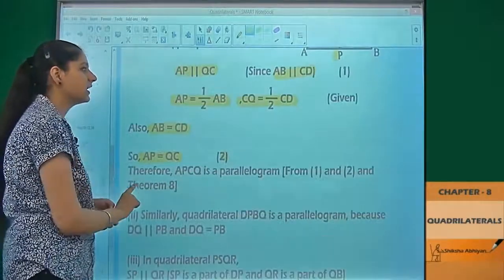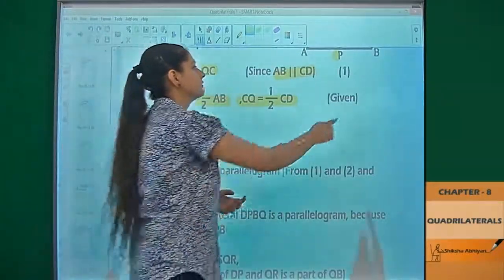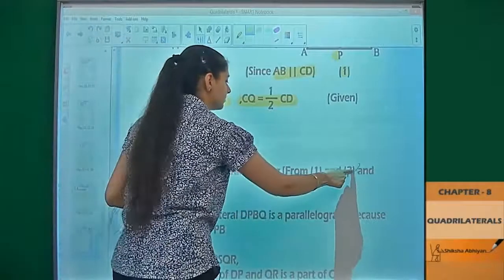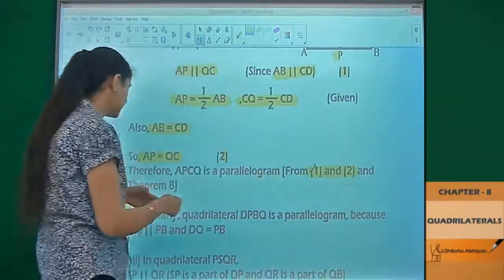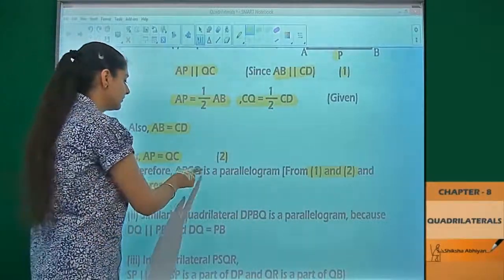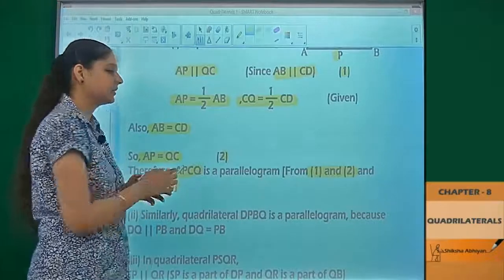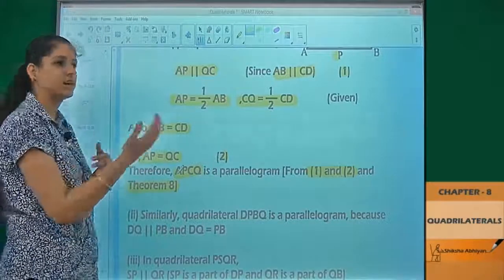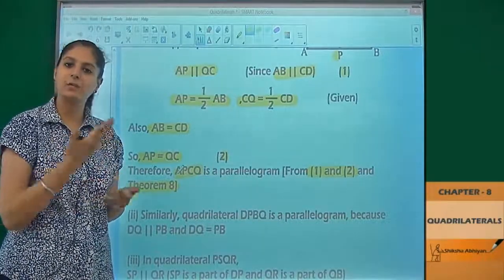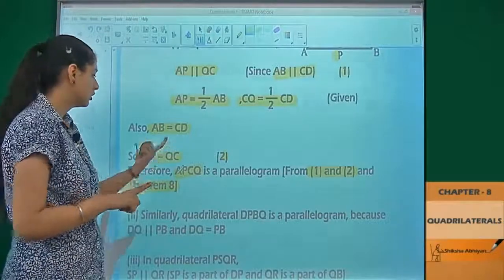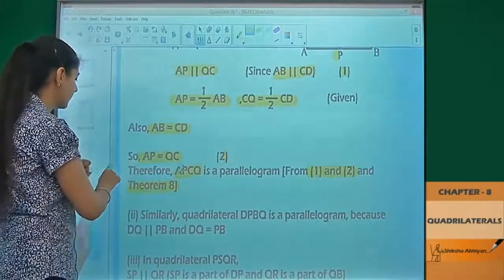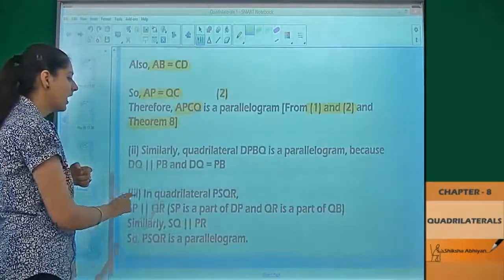Using equation number 1 and equation number 2, along with theorem 8, we can say that APCQ is a parallelogram, because one pair of opposite sides is both equal and parallel.